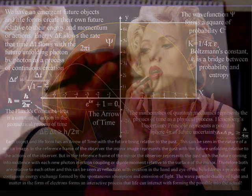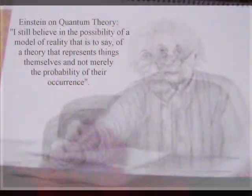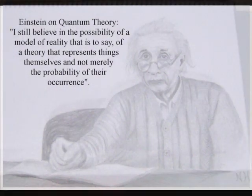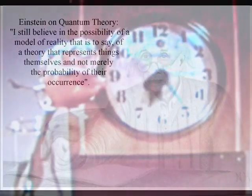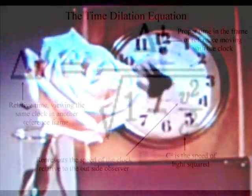The wave-particle duality of light and matter in the form of electrons forms an interactive process that life can interact with, forming the possible into the actual. We have an emergent future. Objects and life forms create their own future, relative to their energy and momentum, or actions.